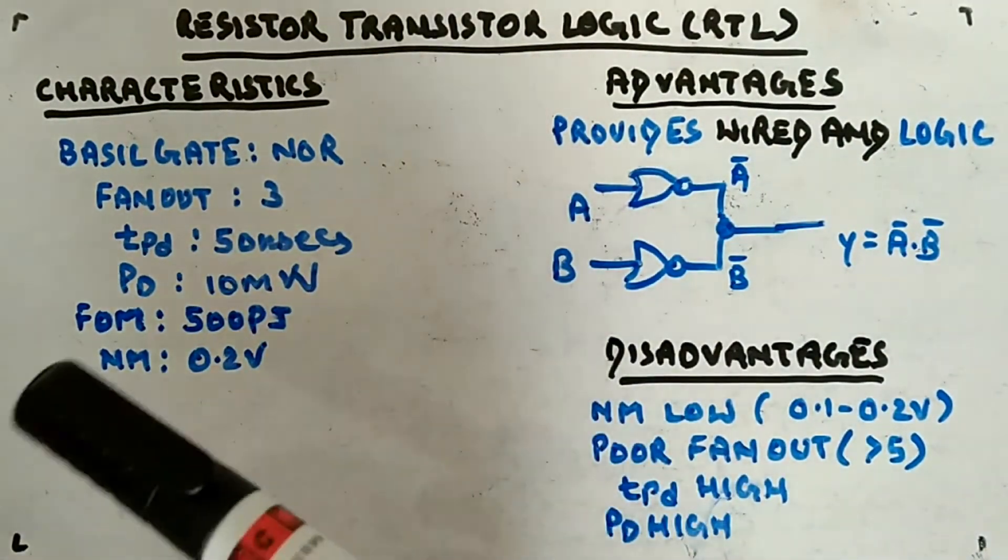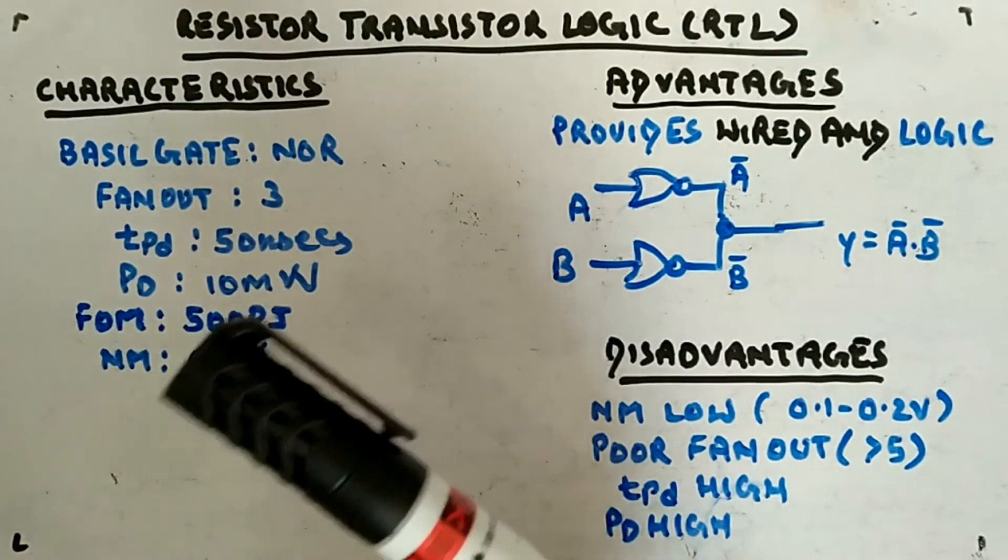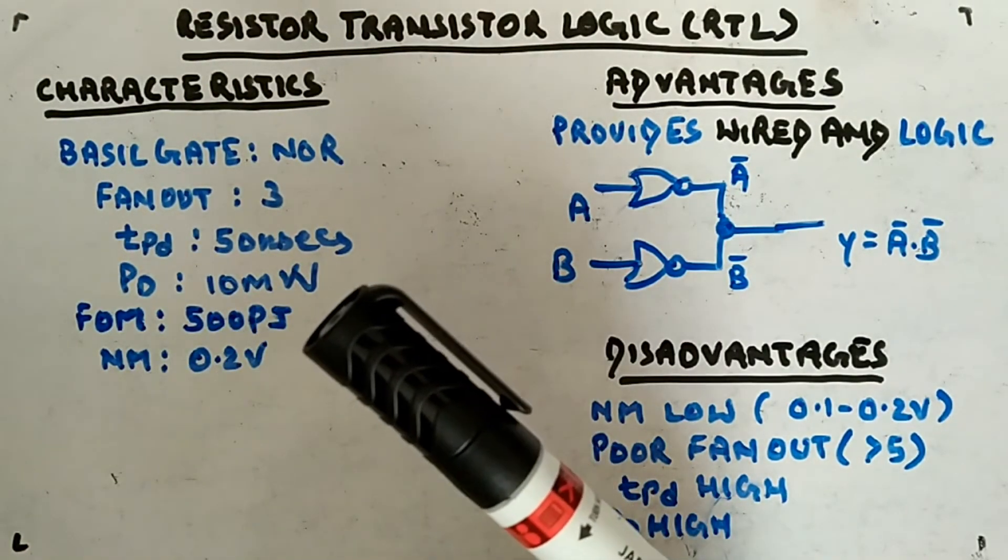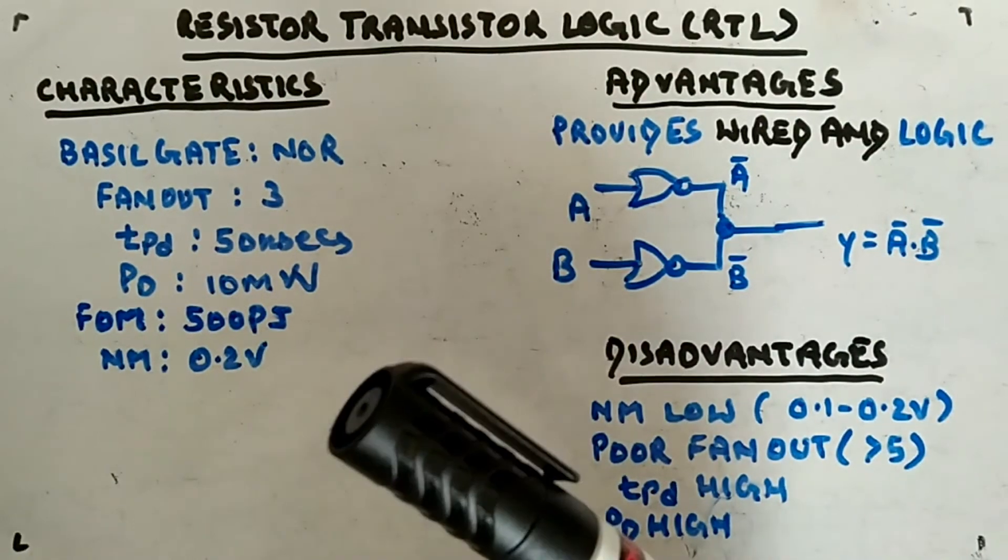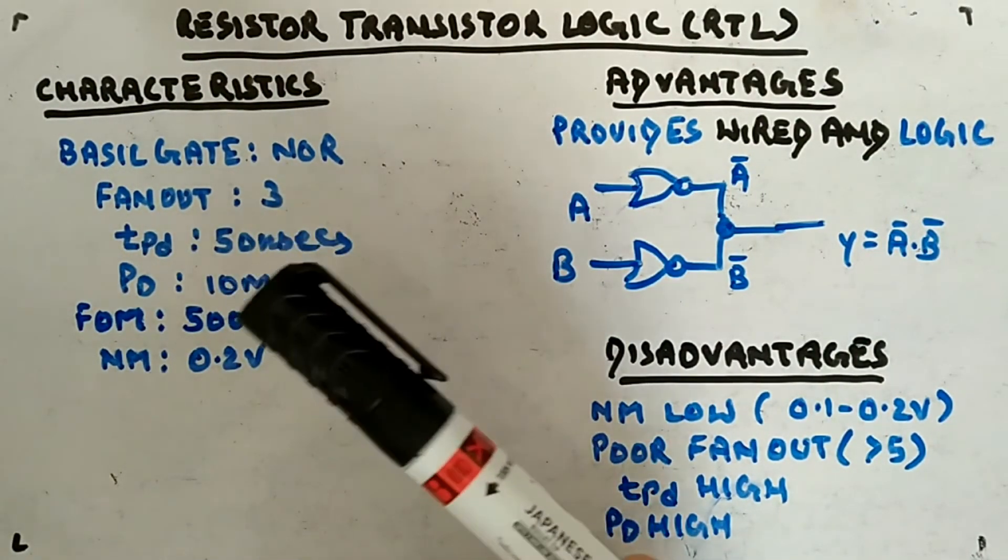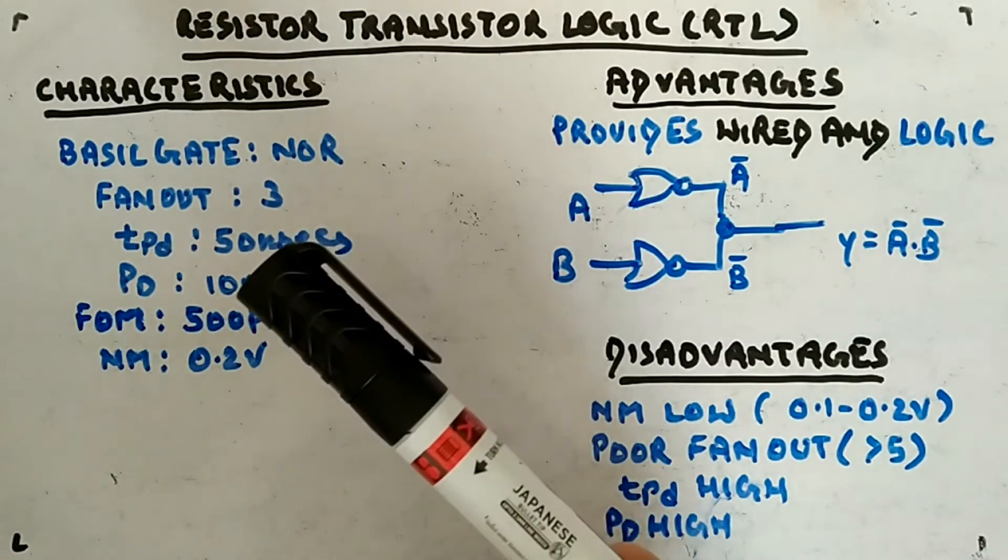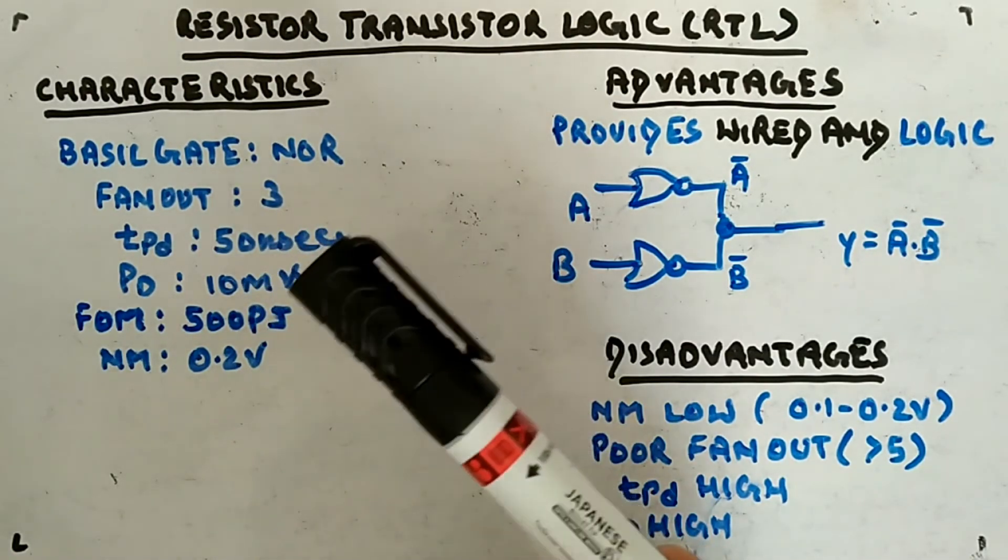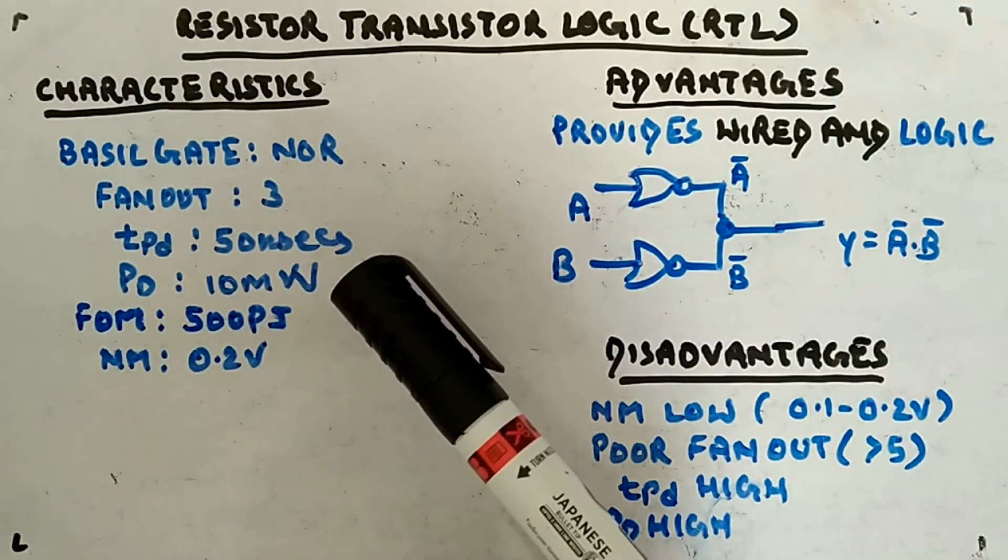Let's look at the characteristics. I have written the characteristics. The basic gate you can have here is NOR gate only. With the help of NOR gate you have to design other gates. Fan-out is around three, which is very low - it's not good, it should be greater than five is considered better.